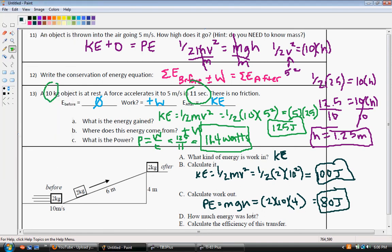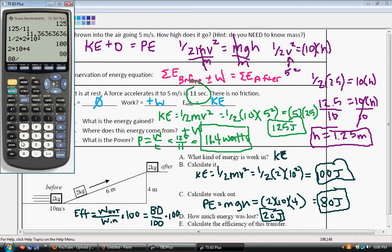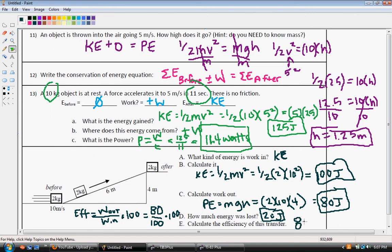All right. So how much energy was lost? Well, the energy that was lost is the difference between the work we put in and the work we put out, which 100 minus 80 is 20 joules. And now it wants us to calculate the efficiency of this transfer. Well, efficiency is our work out over our work in times 100, which is equal to our work out. We got 80 joules out of the system, and 100 joules is what we put in, and then times 100. So we do 80 over 100. And we get 0.8, and then we multiply that by 100, and we have 80% efficiency. So this system is 80% efficient.